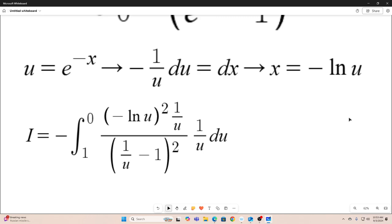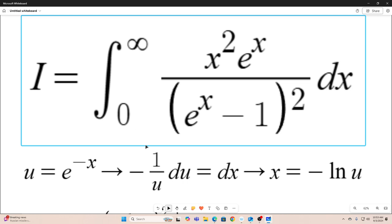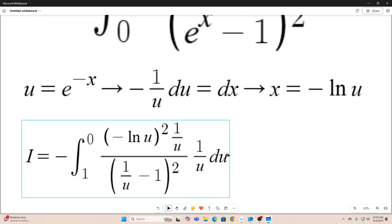Next, we just plug in the substitution directly. We literally plug in everything that it says. Our x is going to be equal to negative natural log u. So we replace all our x's with negative natural log u.